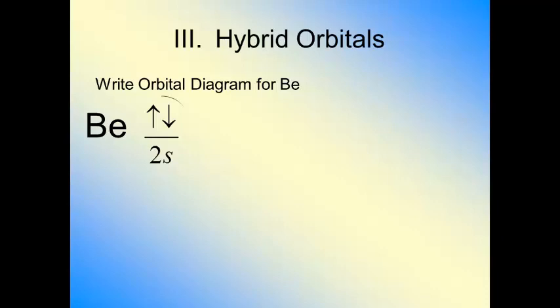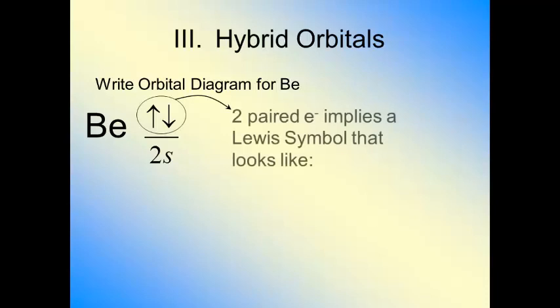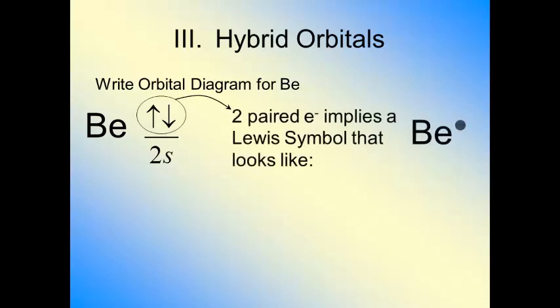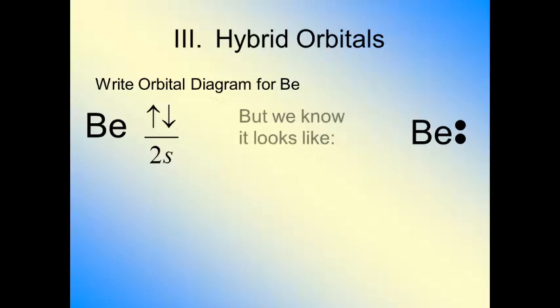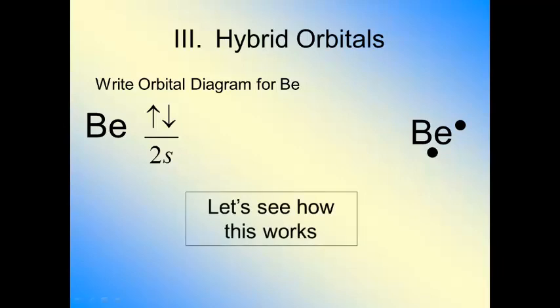This is what beryllium would look like, but the problem is when you have two paired electrons like that, the Lewis symbol would lead to something like this where there's a pair. We know that beryllium can form two bonds because beryllium should really have a Lewis symbol that looks like this, two single dots equaling two bonds. Remember, single dots equal bonds. So there's got to be something else going on here.